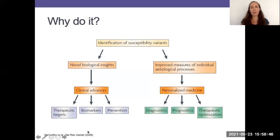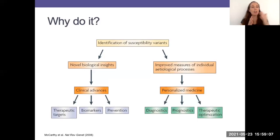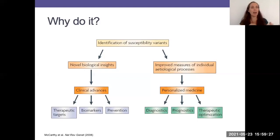So why do genome-wide association studies? In this flow diagram we have two branches capturing some of the main reasons. As we look at genetic variation and their association with complex traits, there is a hope that we will be able to identify further understanding of the biology underpinning complex mechanisms expressed as complex traits. If it's a disease outcome you're looking at, you might illuminate new therapeutic targets or biomarkers, advance prevention methods, or identify new ways of alleviating distress.